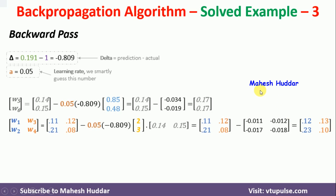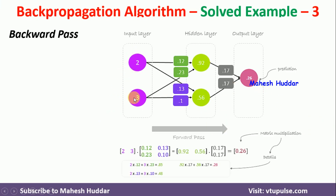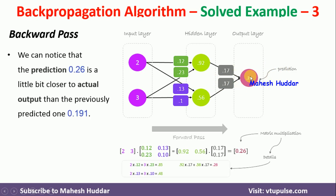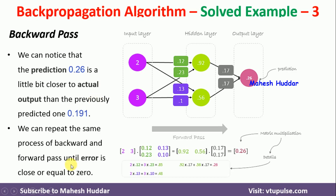Once we find these new weights, the neural network is updated accordingly. We again propagate this input from the input layer to the output layer. Using the summation function — without an activation function — we get the new predicted output as 0.26, where the actual output is 1.0. Previously it was 0.191, now it is 0.26, which is moving towards the actual output of 1. This means we have reduced the error to some extent by updating the weights. The same process is repeated until the error reaches 0, or at least reaches an acceptable level.